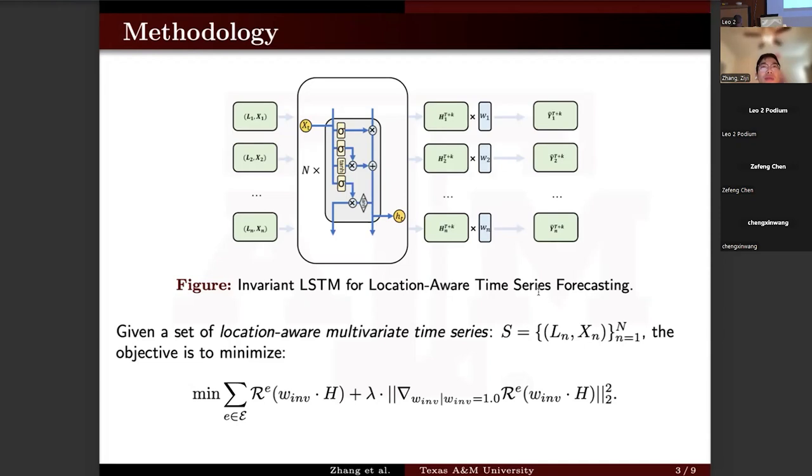Our objective is to minimize the following equation. The first part is an empirical risk minimization, such as the mean square error between the predicted value and the ground truth. And the penalty term is to compute the gradient of the output with respect to invariant weight. Our motivation is to encourage the model to generate an invariant representation across diverse geographical environments.